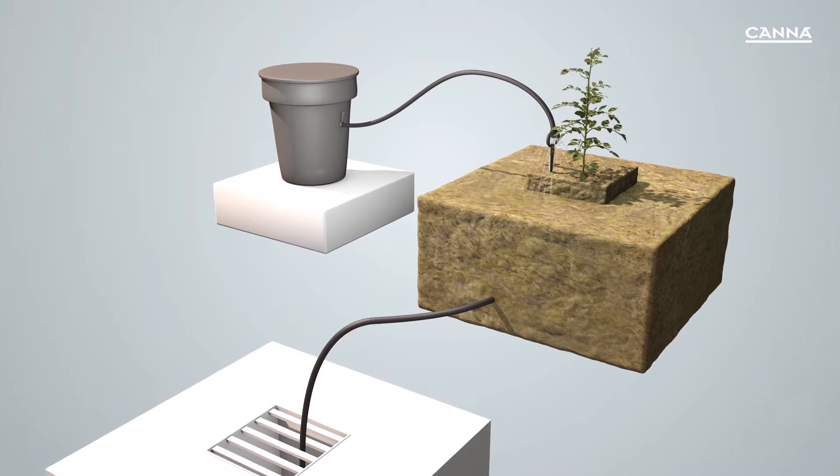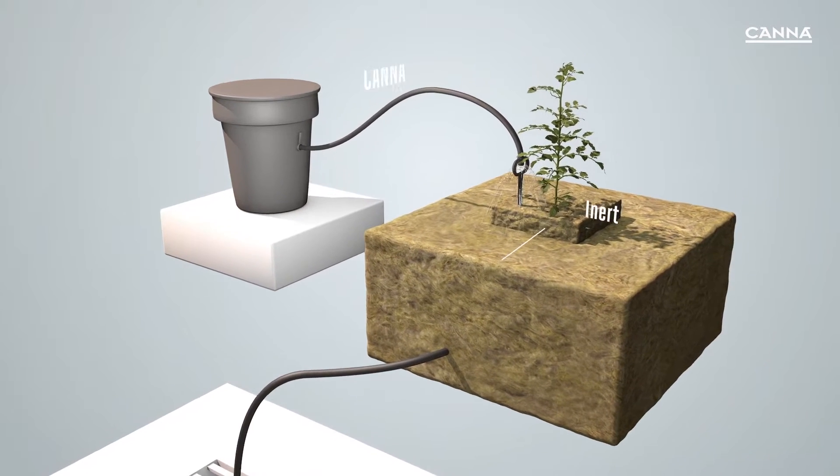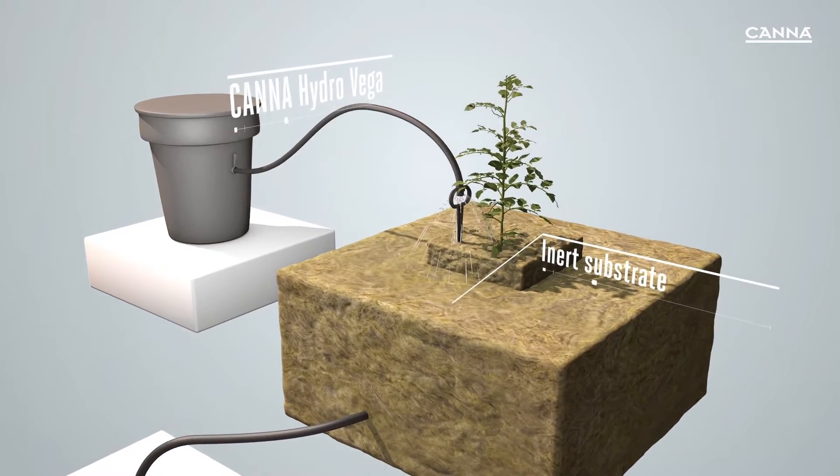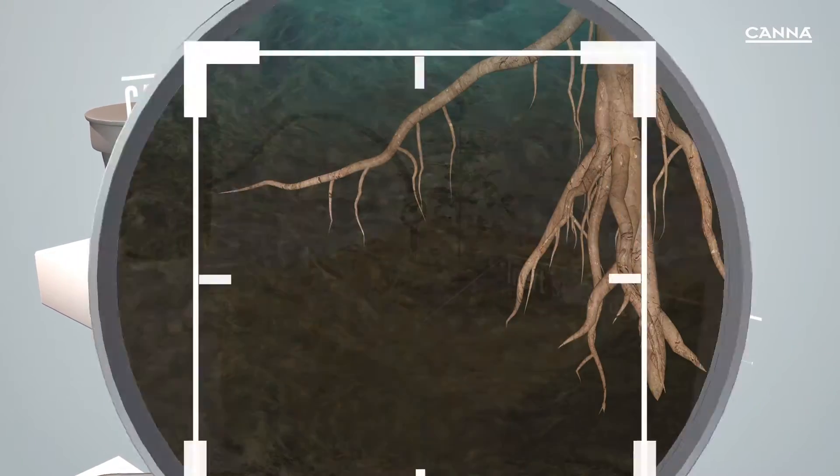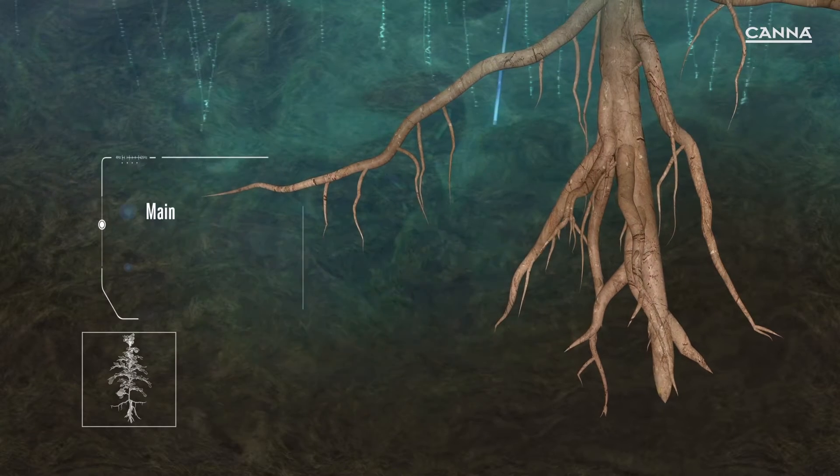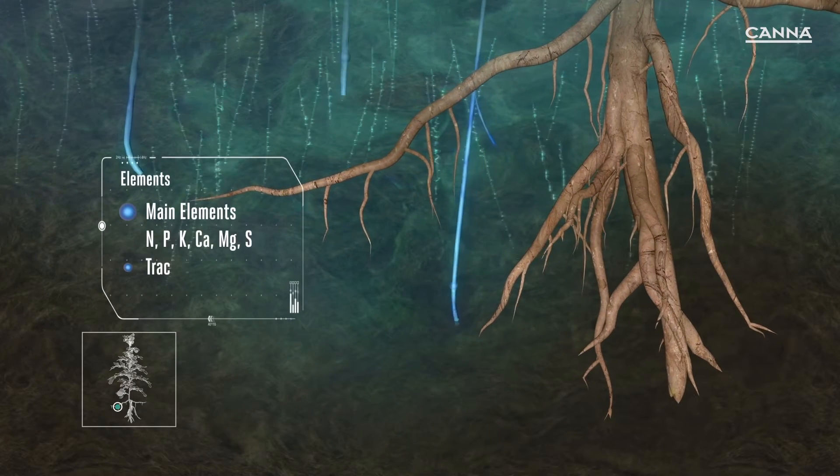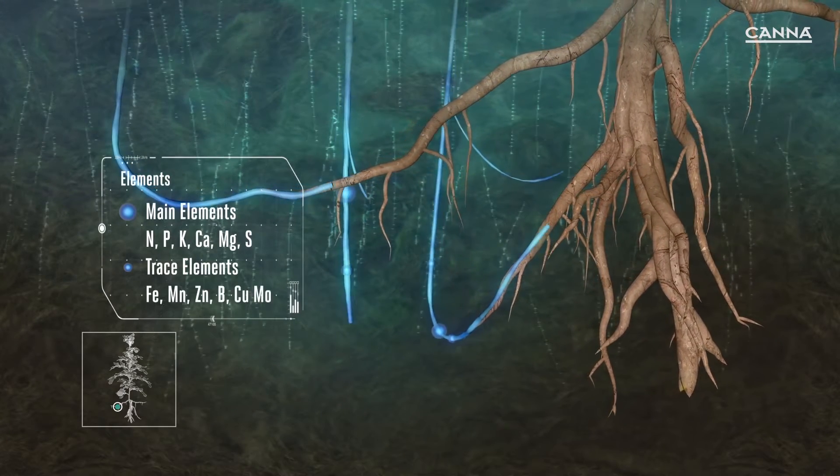Canna Hydrovega contains all the essential ingredients that your plant needs for the all-important vegetative phase. This will ensure that your plants get stronger and grow faster using an inert substrate in a run-to-waste system.